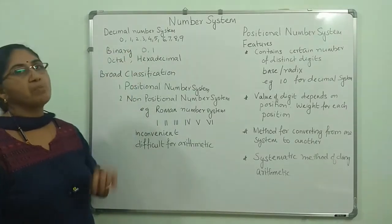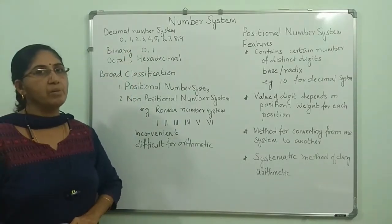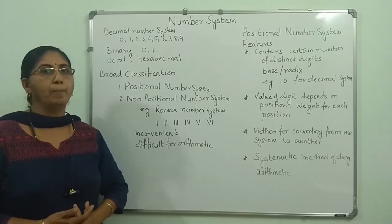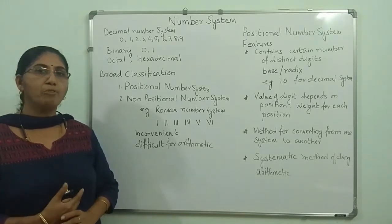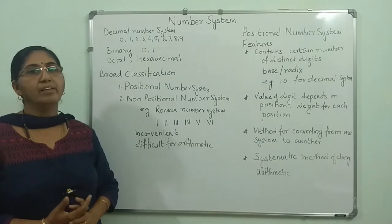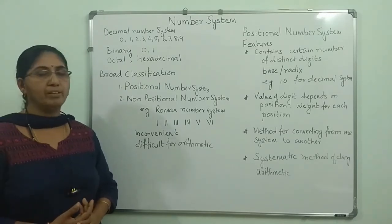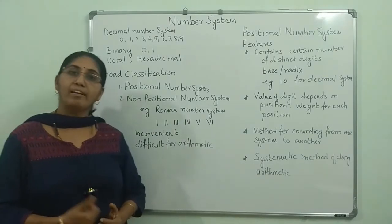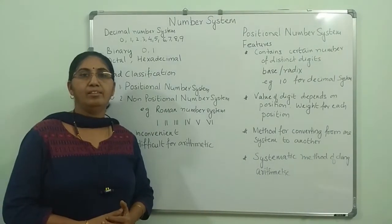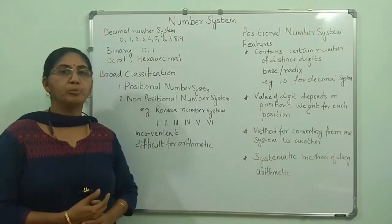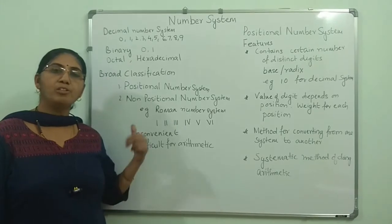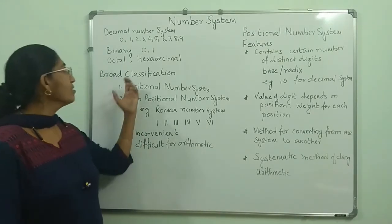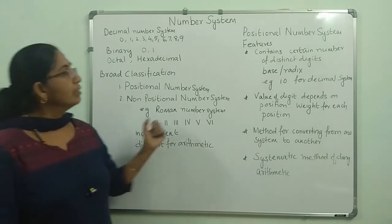Our decimal number system is a positional number system. Suppose you say 10 — depending upon the position of 1 in 10, its value is different. It is not having value 1; it is having value 10. If you take 100, the 1 is in the 100th position. So depending upon the position of that digit 1, its value changes. That is the positional number system.